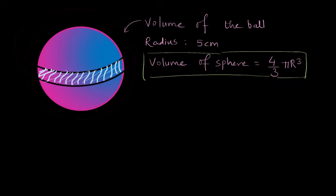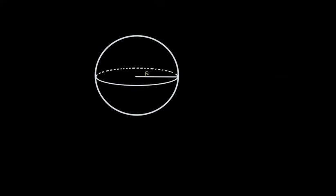So what is the radius of a sphere? Let me just quickly show you how the radius looks like. So if we have a sphere like this, the radius is the distance of any point on the sphere or on the surface of the sphere from the center of the sphere.